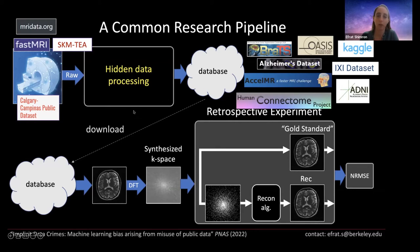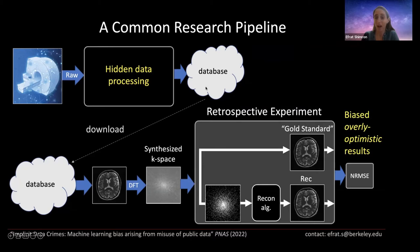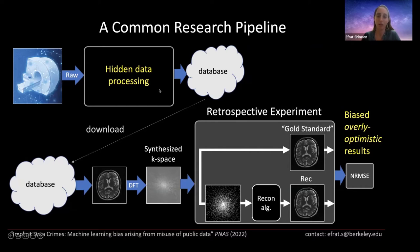We found that using databases that offer processed data actually leads to results that are biased and overly optimistic. Surprisingly, if you download a database proposed for another task — not your task — and run your task on it, you will get fantastic results. But these results are misleading — they're basically too good to be true. And that's what I'm going to show you today: how using preprocessed data for development of reconstruction algorithms can lead to biased, overly optimistic results.